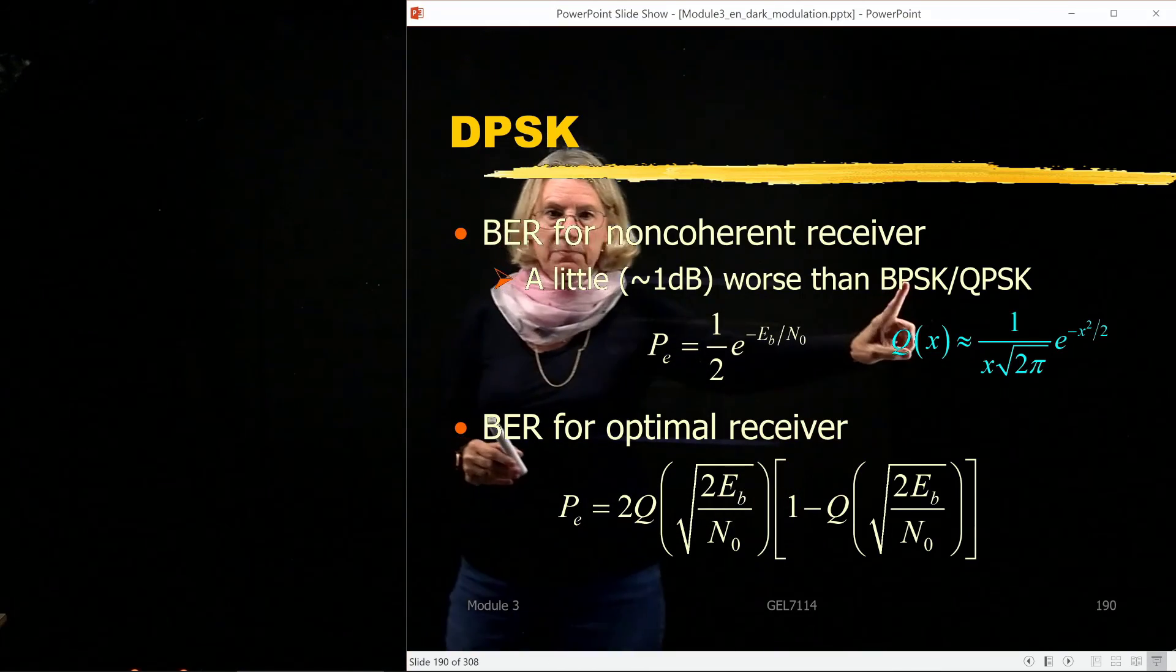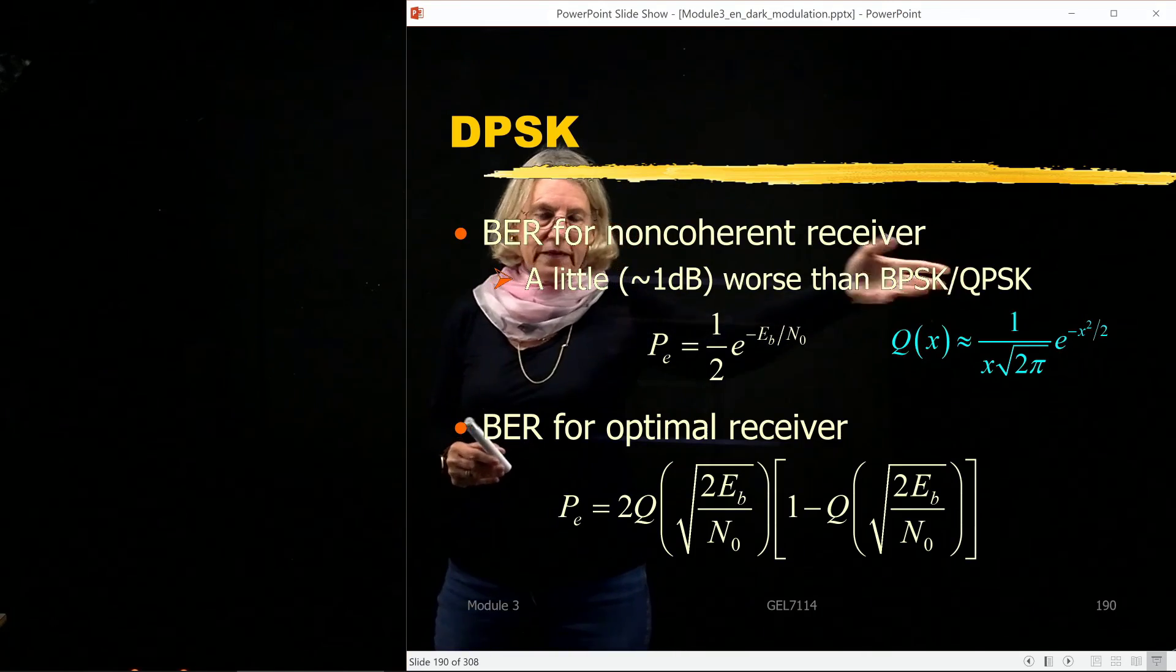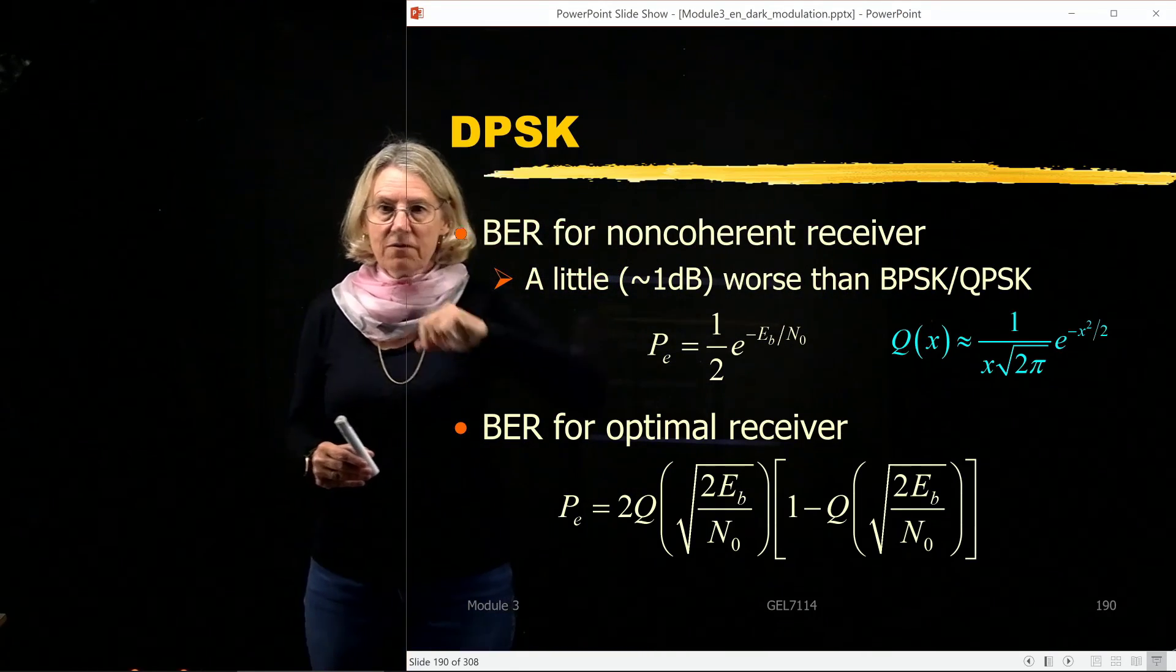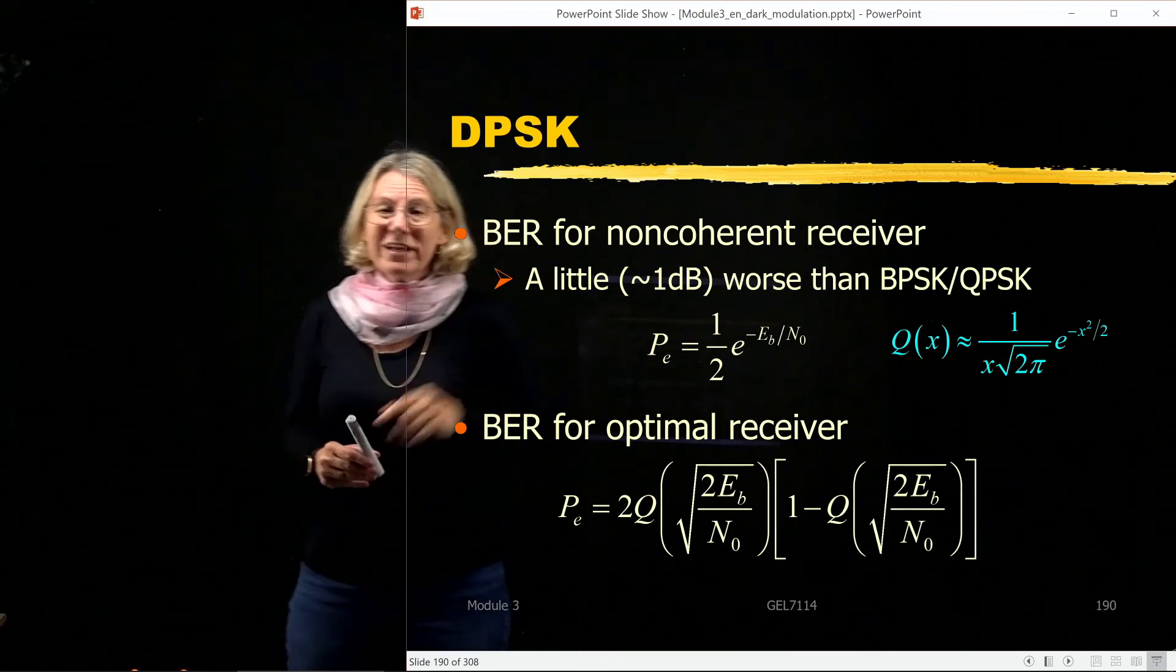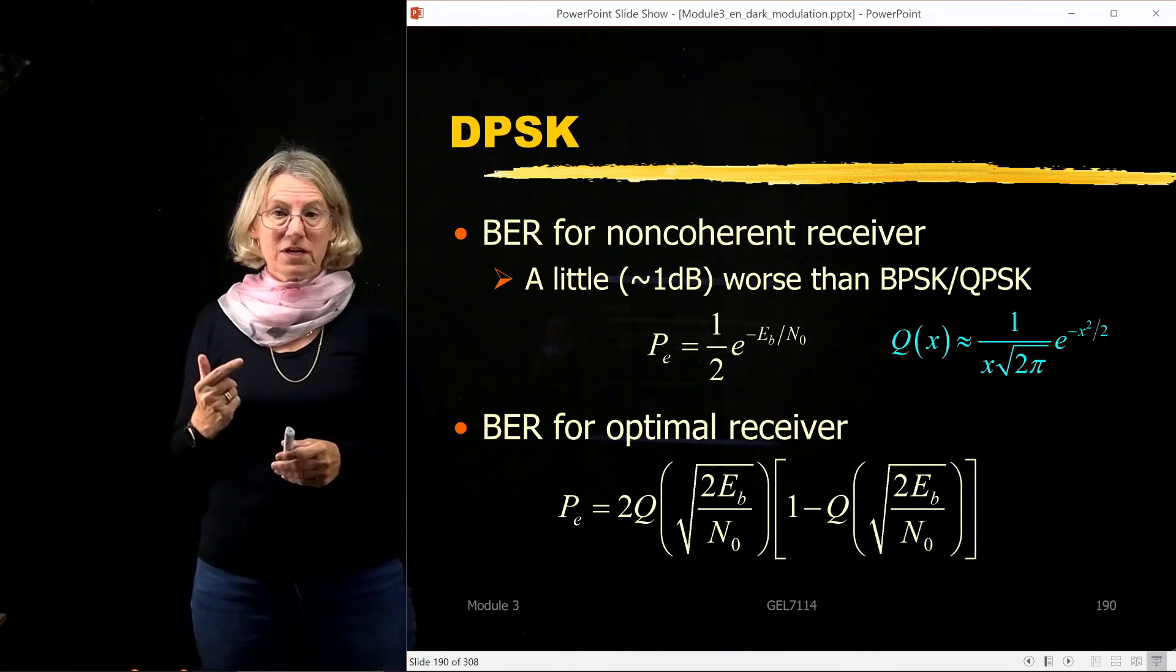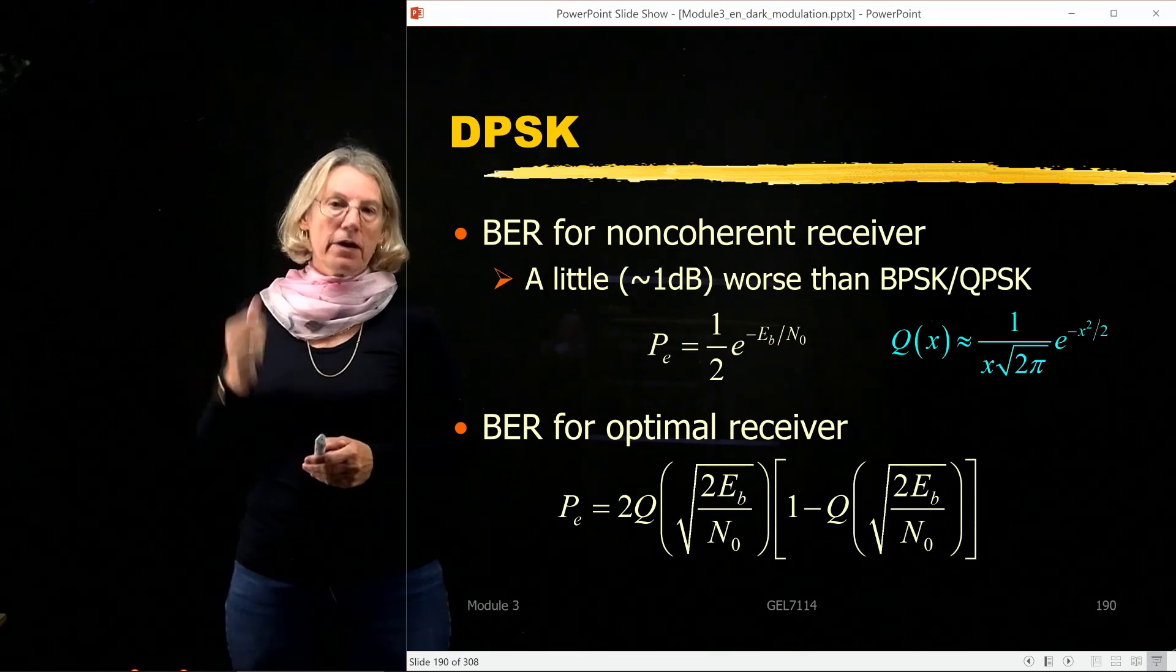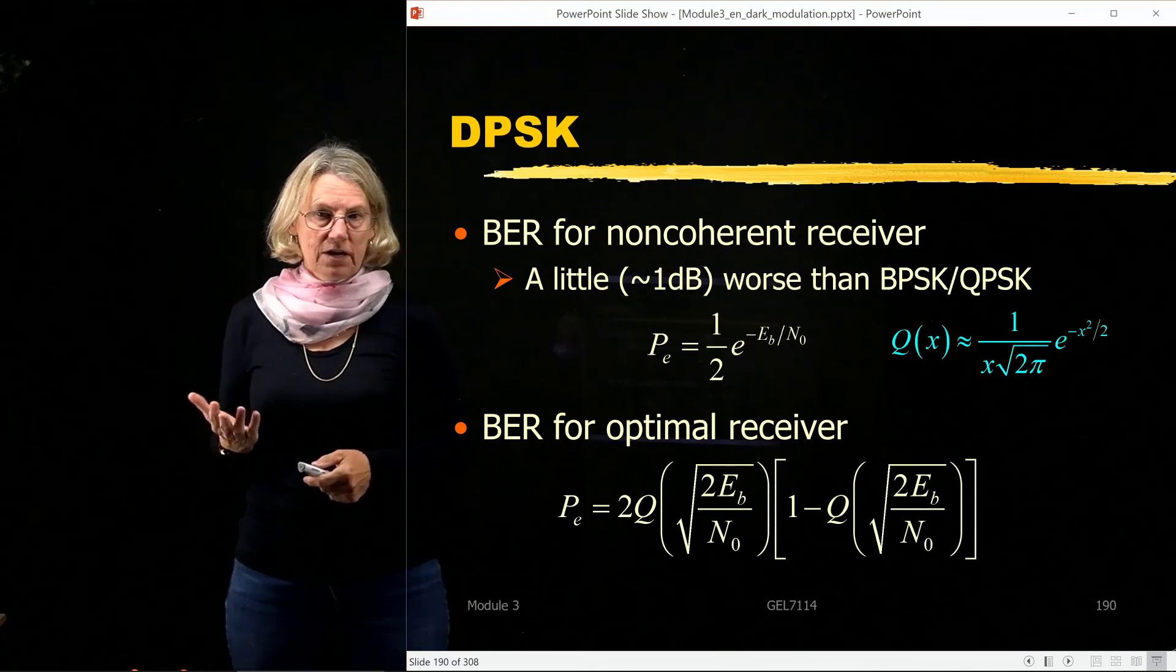And in fact, if we compare coherent BPSK or QPSK, they have essentially the same performance, with this differential binary phase shift keying, it's only a little bit worse. It's really only one dB worse. So the penalty, one dB, very reasonable for a much simpler receiver. And that's pretty much true for binary or for QPSK.